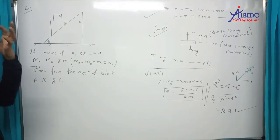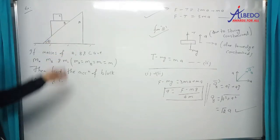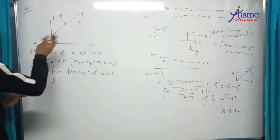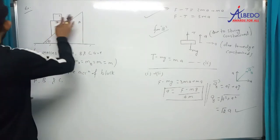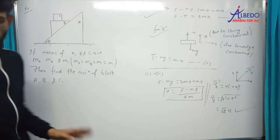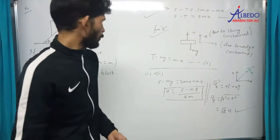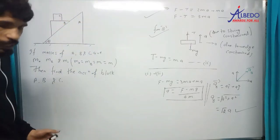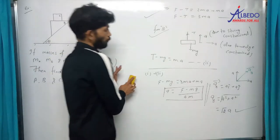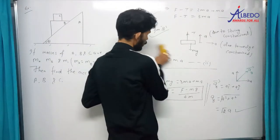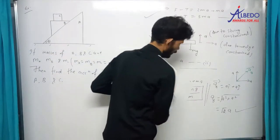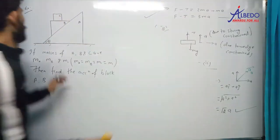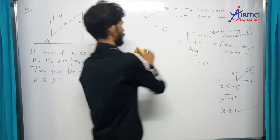First of all, Newton's law लिखने से ज़्यादा ज़रूरी यह है कि सारे surfaces smooth हैं — कहीं पर भी friction नहीं है. Newton's law से पहले हमें इनके बीच acceleration का relation बताना पड़ेगा बिना पूछे.